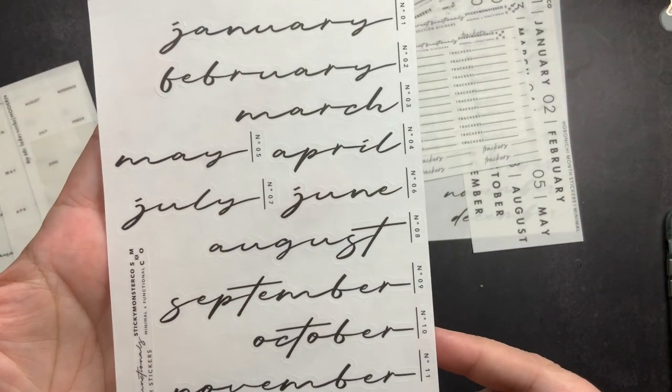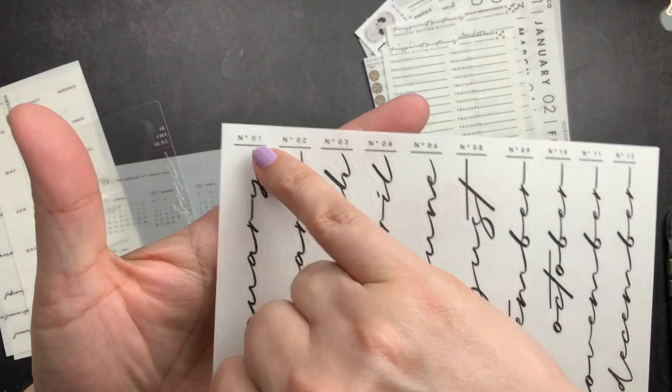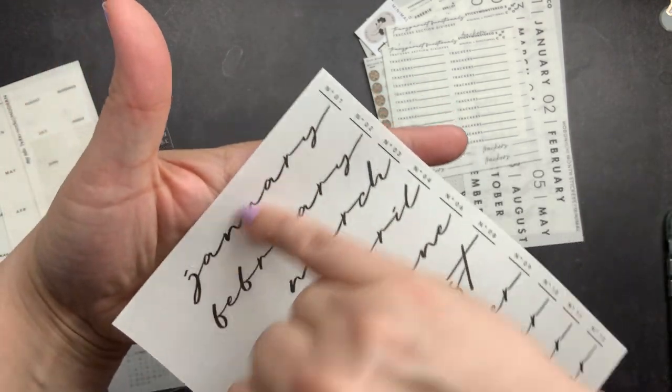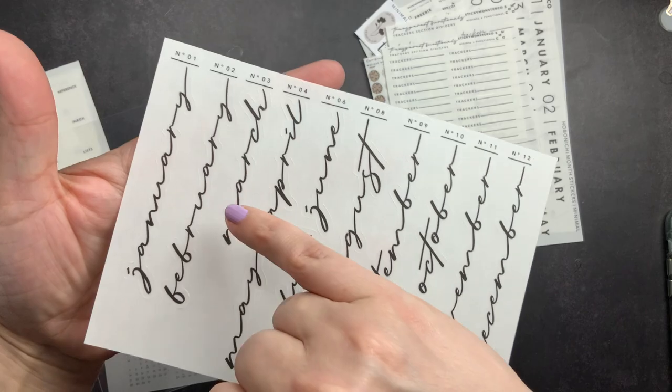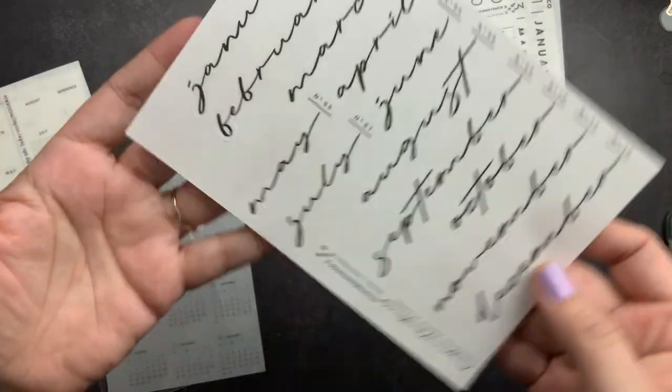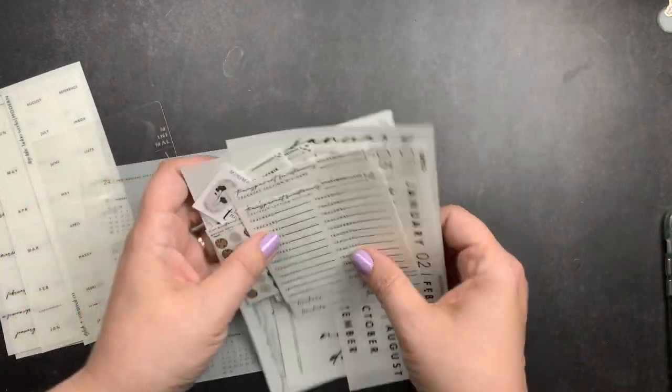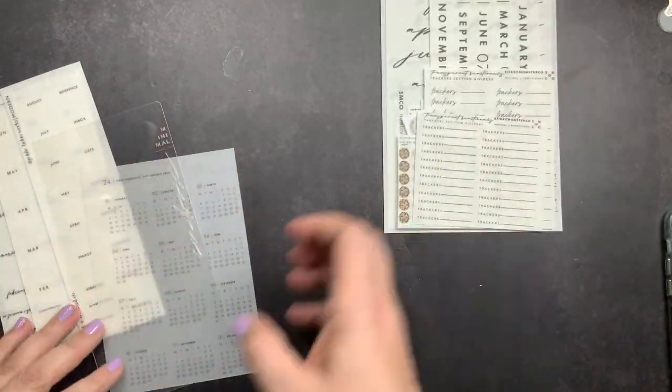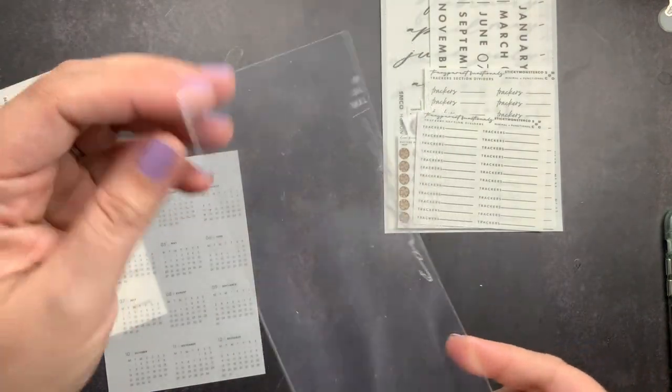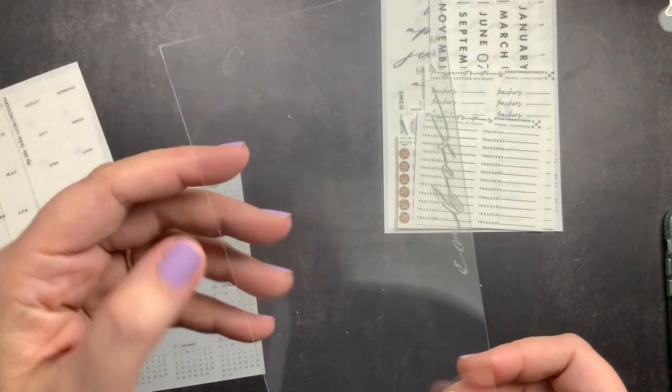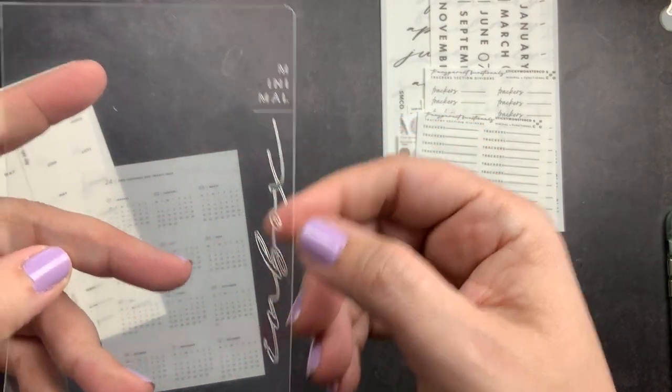And then I got this other set of monthly stickers. And this one has the number of the month like this and then the script down. So we have January, February, March, and so on. I thought it was really, really nice. I just liked it aesthetically. I really like her stickers and the aesthetic of her stickers. And then I have this minimal dashboard. So it's just like a piece of acetate that says inbox minimal.